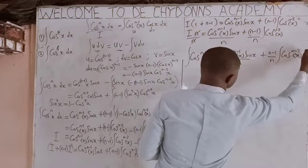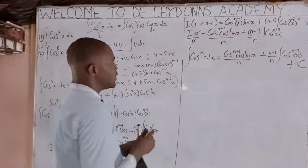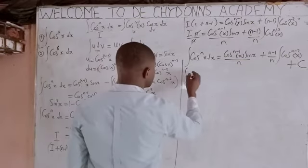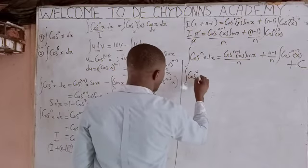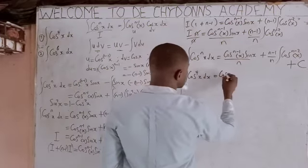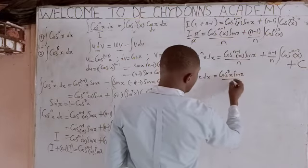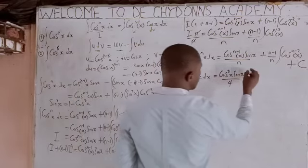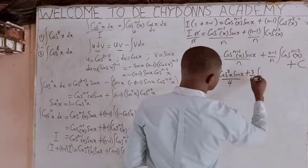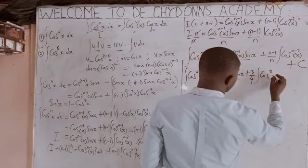You attach plus C because we don't have upper and lower limits. That is the shortcut formula we have to use to solve it. Now integrate cos^4(x) dx. Our n is 4, so: (4-1)cos^3(x)·sin(x) over 4, plus (4-1) over 4 times ∫cos^(4-2)(x) dx, which is (3/4) ∫cos²(x) dx.